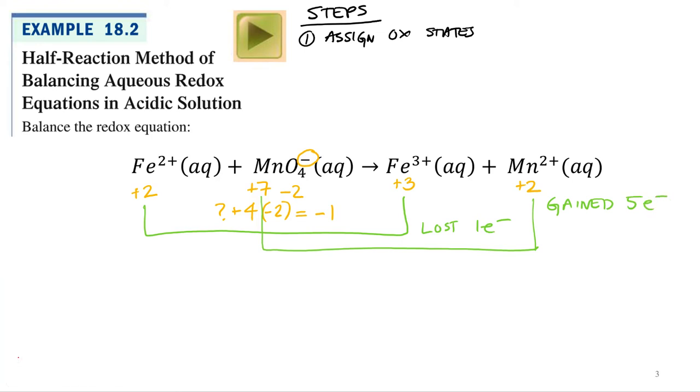All right, so my next step. What's my next step? Write out the half reaction. So iron went from a plus 2 to a plus 3. It lost electrons. That's what? Oxidation. That's my oxidation half cell. Half reaction. Fe 2+ goes to Fe 3+ plus 1 electron.